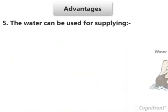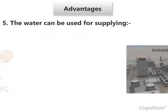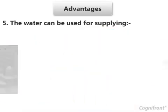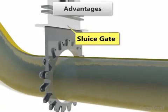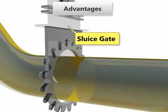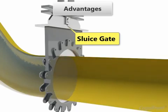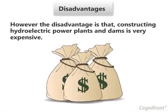The water can be used for supplying drinking water, irrigation, water sports, industries, power plants, etc. Another advantage is that when electricity is not needed, the sluice gate is closed to stop the generation of electricity. It also allows storage of water to be used whenever necessary.